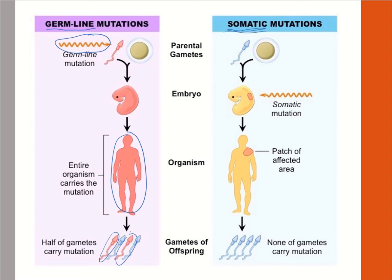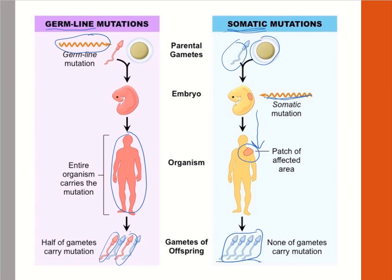With a somatic mutation, the sperm and egg do not carry the mutation, but then a mutation occurs in the embryo. As it develops into a full adult, there's an affected area. But somatic mutations are not passed down to the gametes — so here we have four unaffected sperm because it was a somatic mutation.